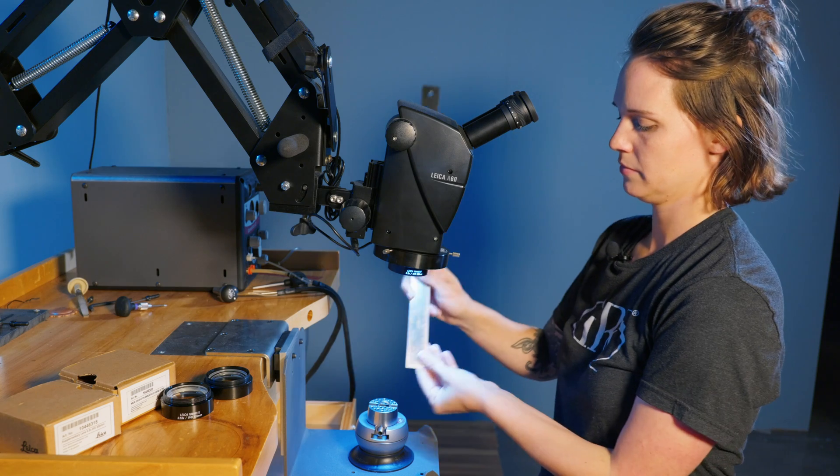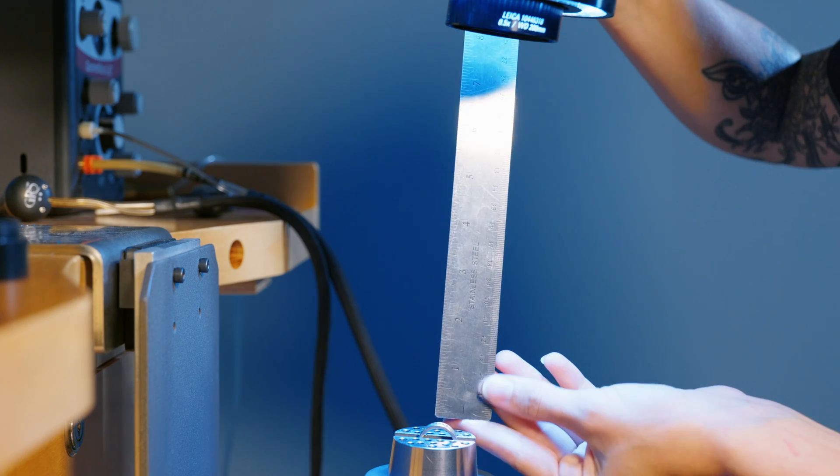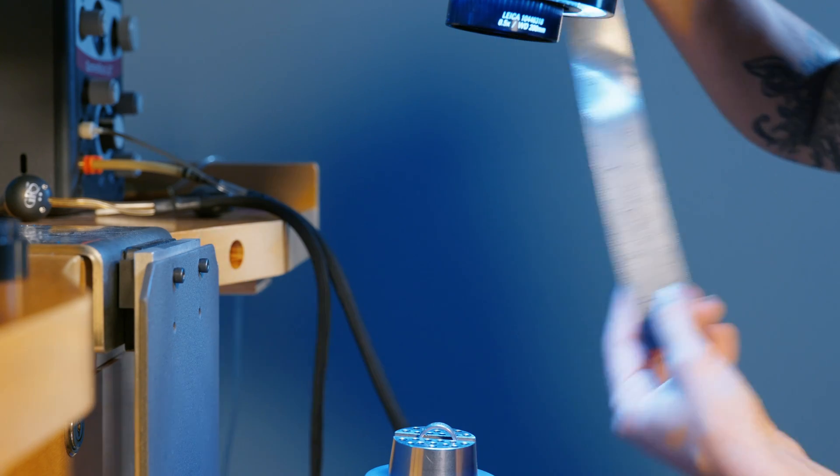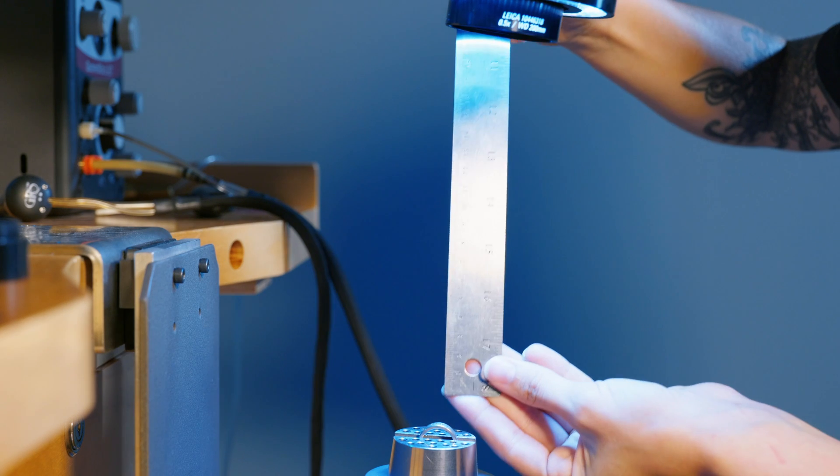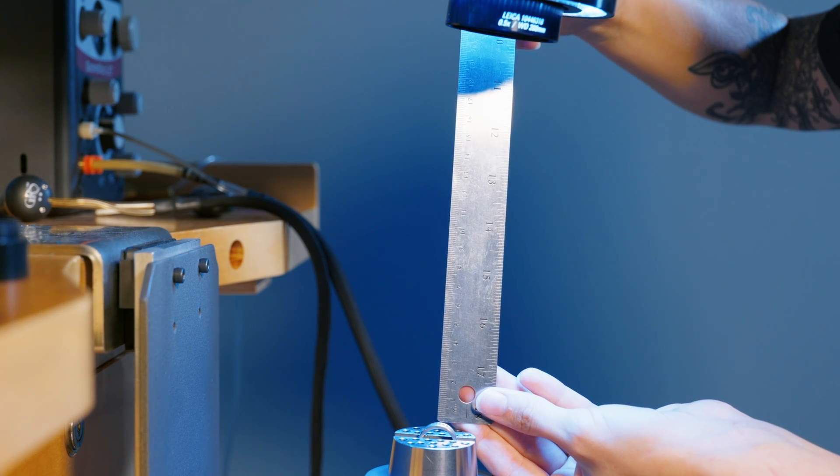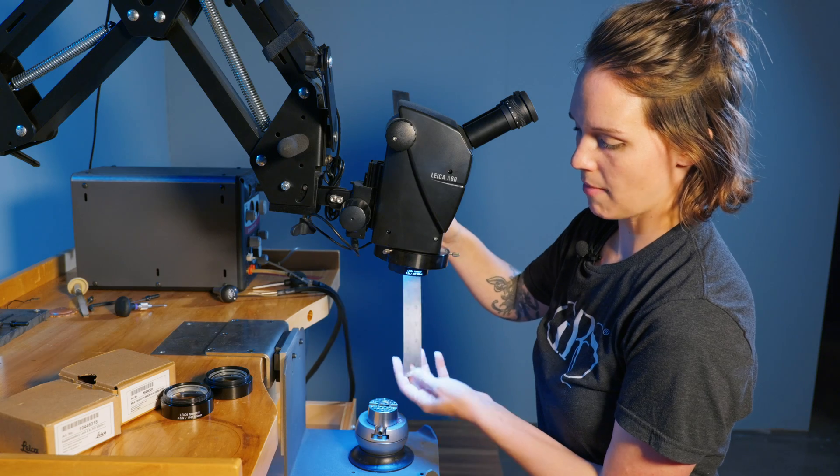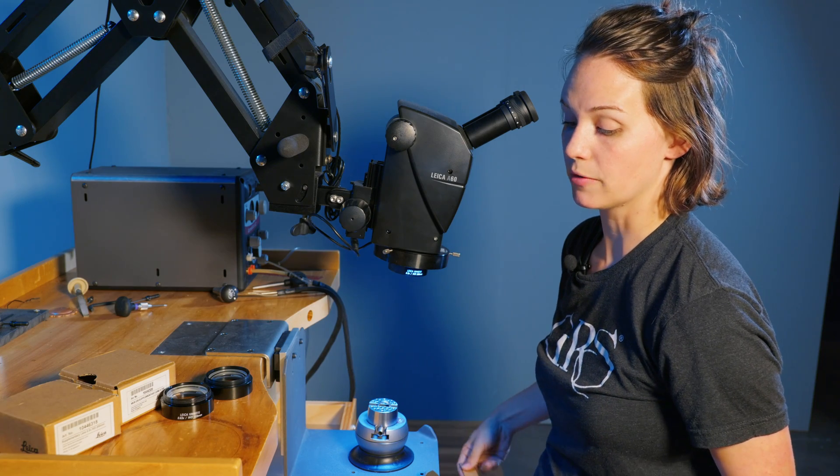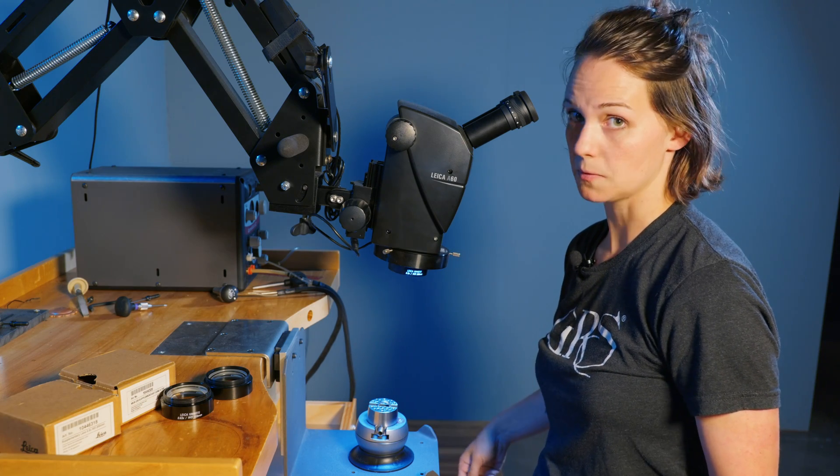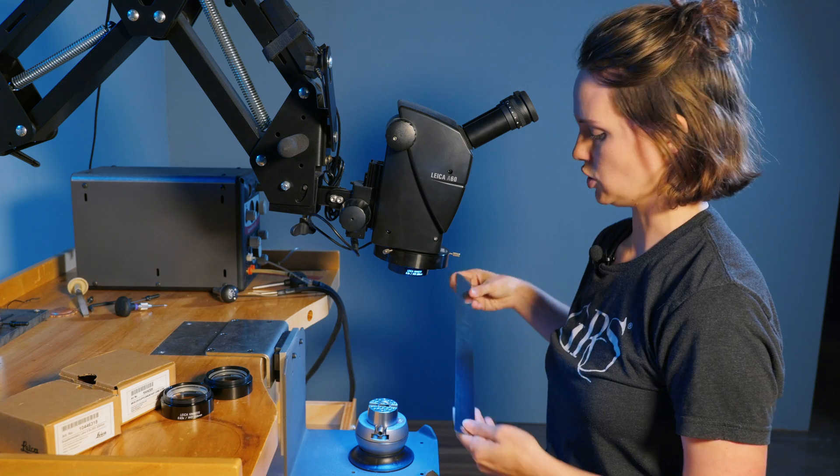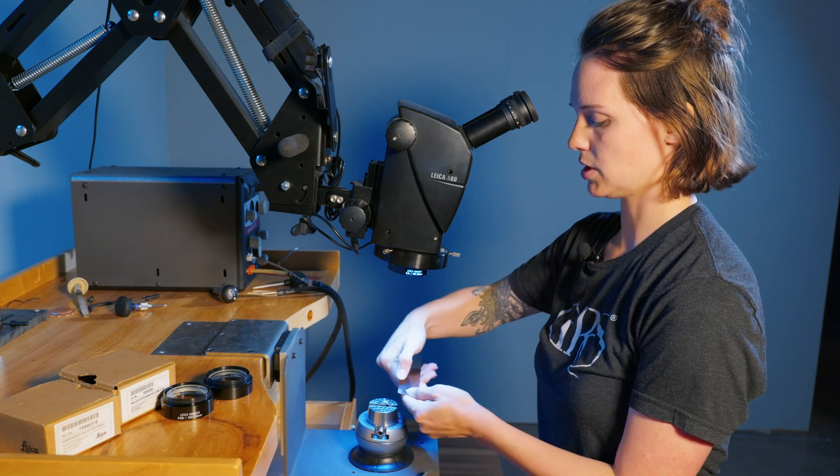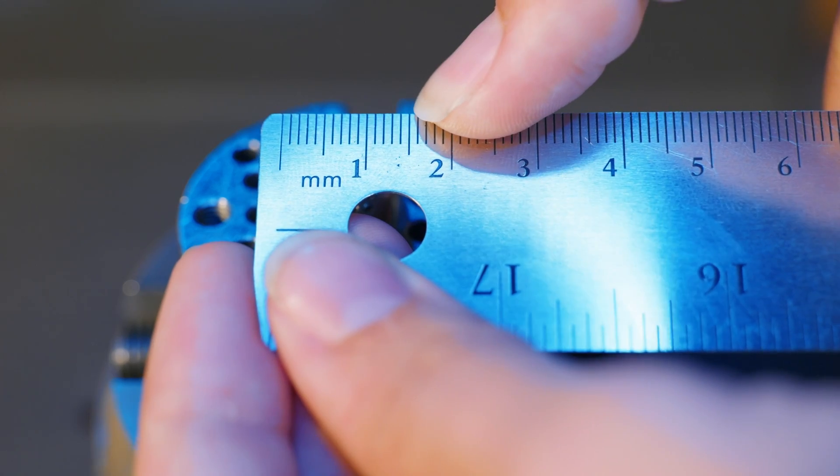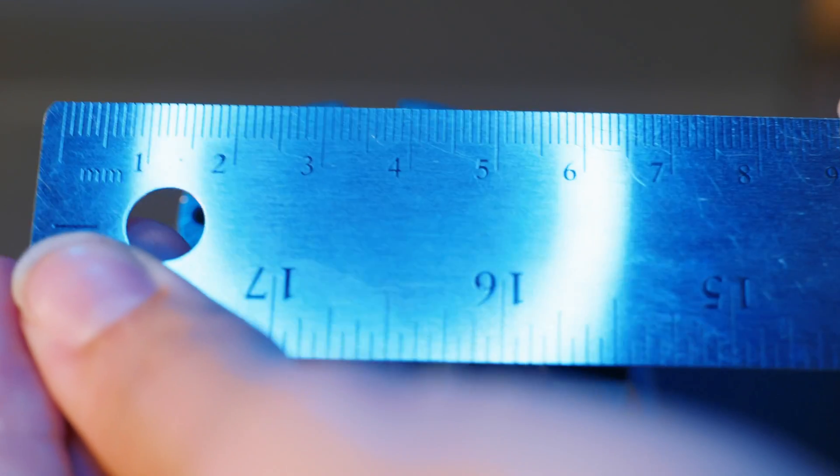7.8 inches is the actual measurement or 200 millimeters. The magnification range is anywhere from 2.5 to 15 and your field diameter jumps from 15 to 90 millimeters. So as you can see, you can work on a much larger piece.